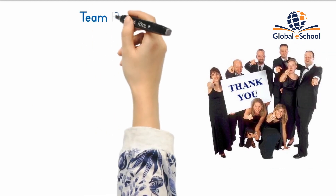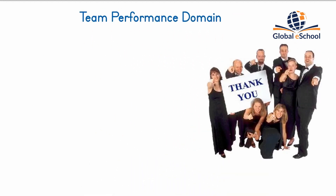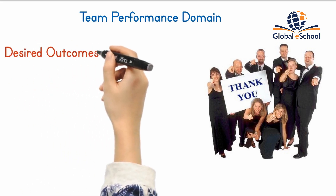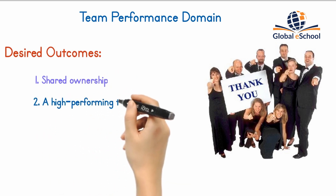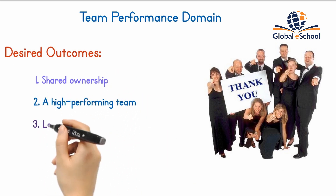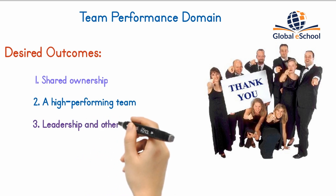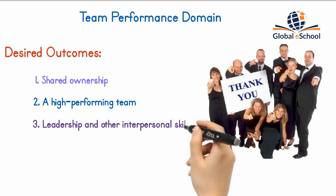The team performance domain addresses activities and functions associated with the people who are responsible for producing project deliverables that realize business outcomes. Effective execution of this performance domain results in the following desired outcomes: shared ownership, a high-performing team, applicable leadership, and other interpersonal skills demonstrated by all team members.